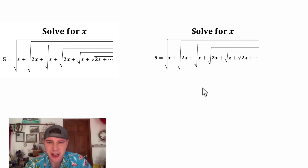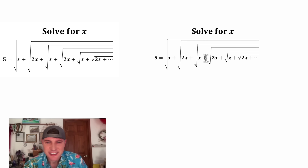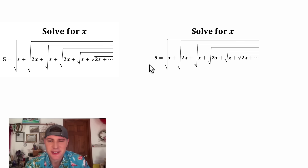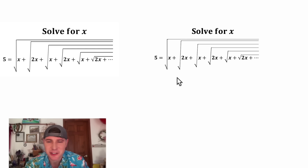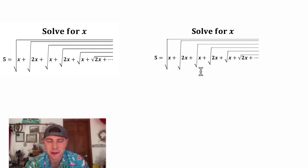Hey guys, this is such a fun problem. I don't think I've ever seen anything like it. There's an infinite number of x's and it wants us to solve for x. It says 5 is equal to the square root of the quantity x plus the square root of the quantity 2x plus the square root of the quantity x plus the square root of quantity 2x, and this goes on forever.